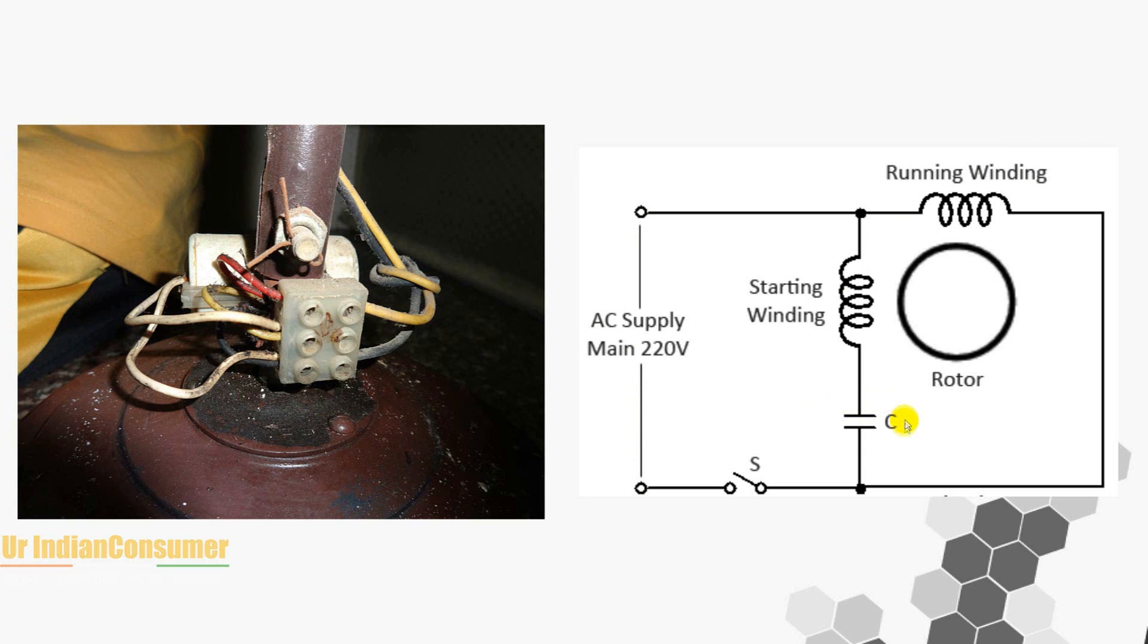Now let's talk about the capacitor. So the one end of the capacitor is connected to the starting winding and the other end is connected to the running winding and finally runs down to the neutral point. So from this circuit diagram, one thing is very clear that one of the points of the capacitor goes to the neutral point.